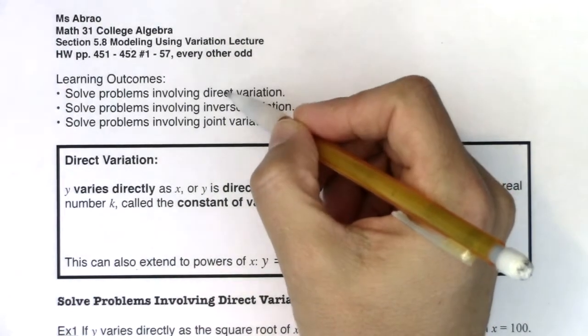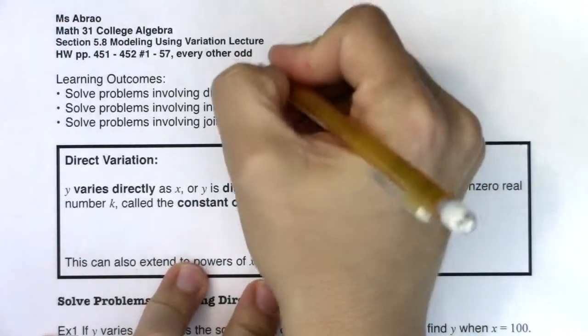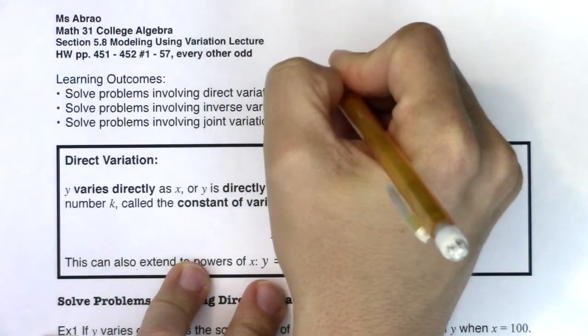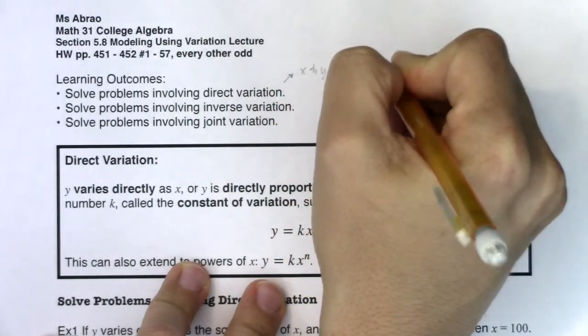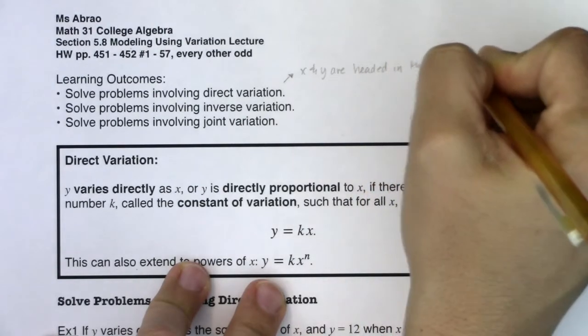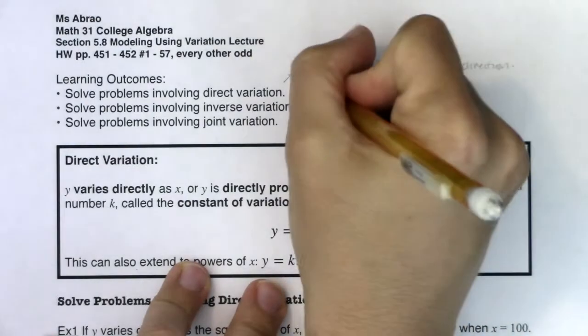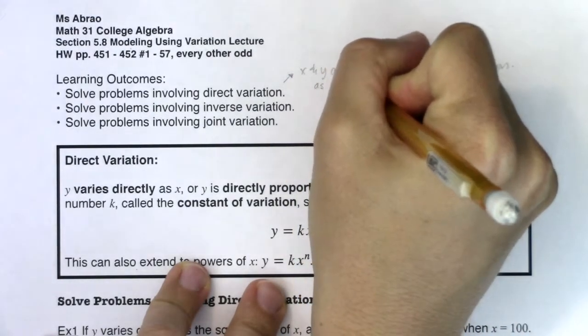When we talk about direct variation, this means two variables are heading in the same direction. So here we would say x and y are headed in the same direction. If you're wondering what that sentence means, it means as x goes up, y also goes up.